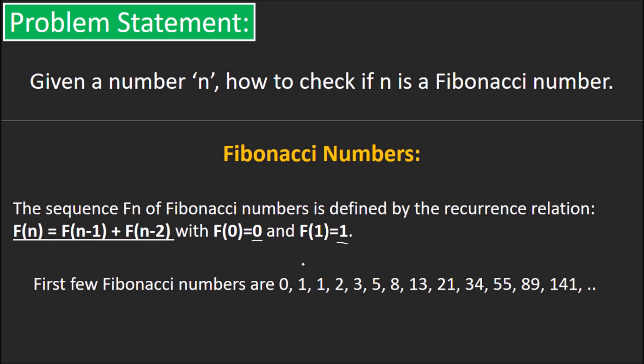The first few Fibonacci numbers are listed here. See for yourself: 0 plus 1 equal to 1, 1 plus 1 equal to 2, 1 plus 2 equal to 3, 2 plus 3 equal to 5, 3 plus 5 equal to 8 and so on.